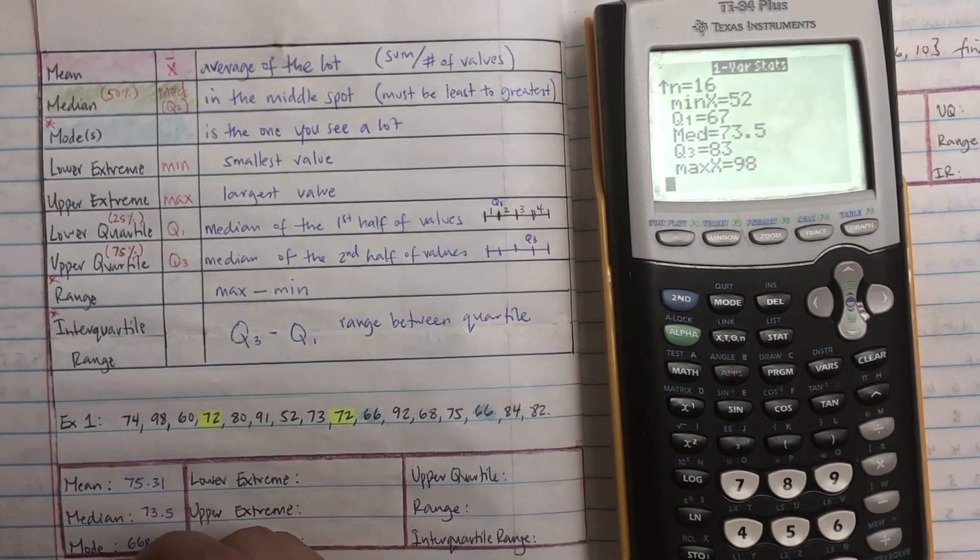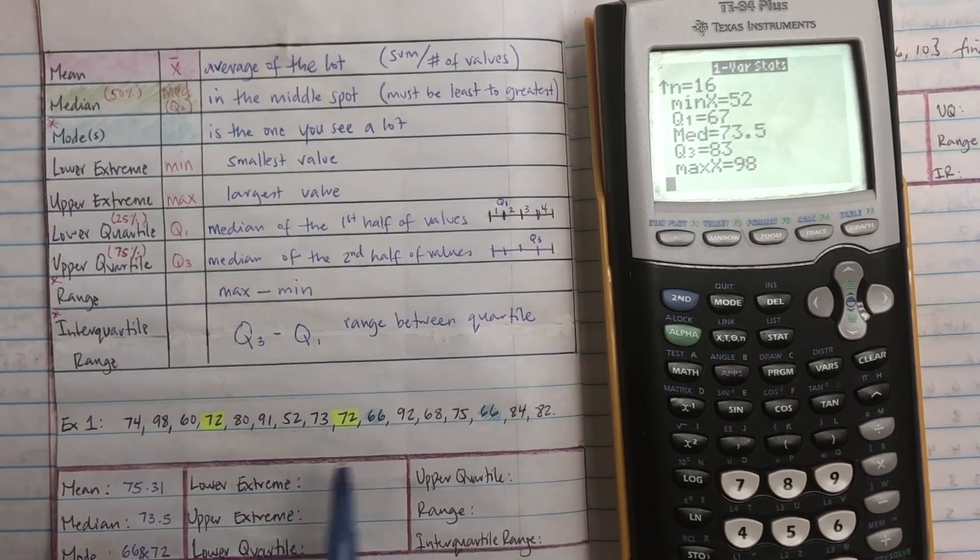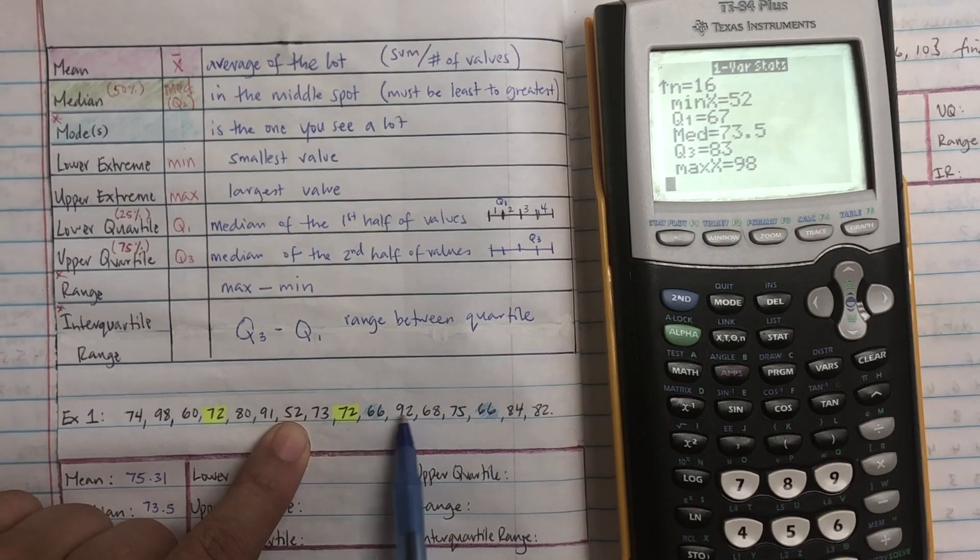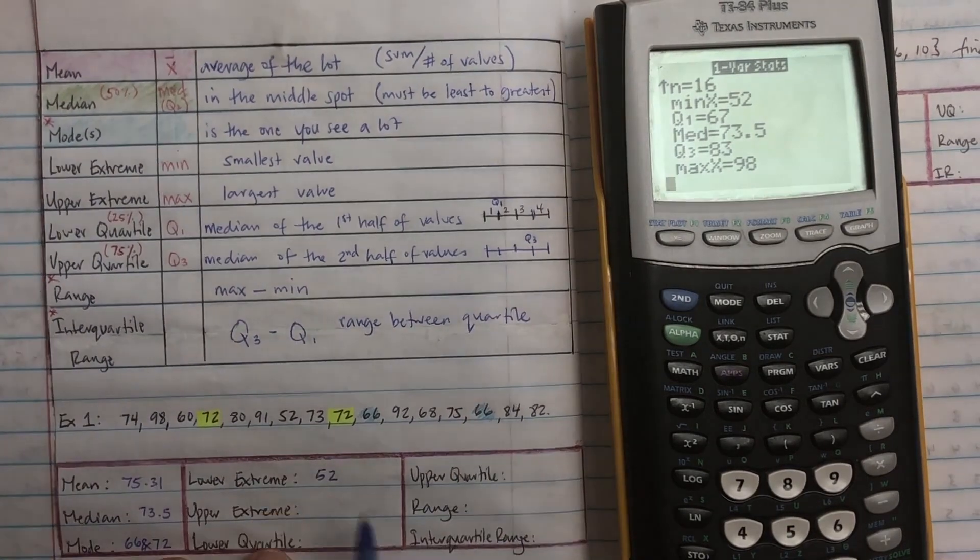Mean 75.31. Lower extreme is the smallest number. I'm going to find it by hand, but you really just go into the calculator and find your minimum. So the lowest extreme is 52.